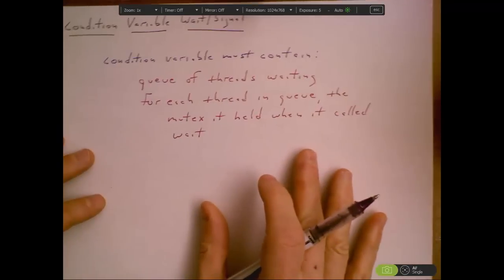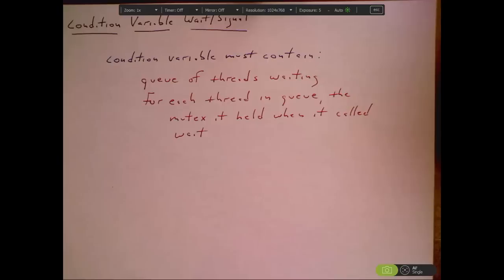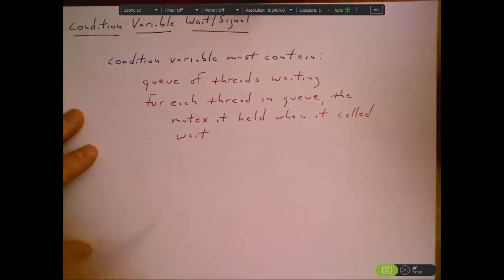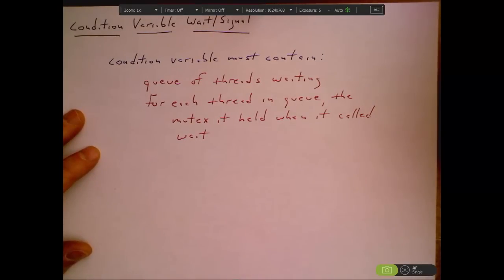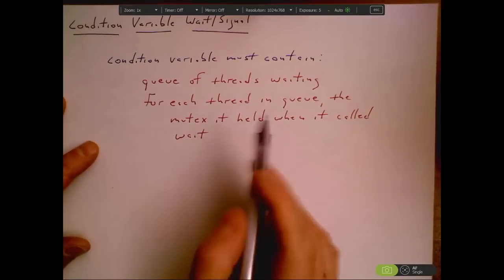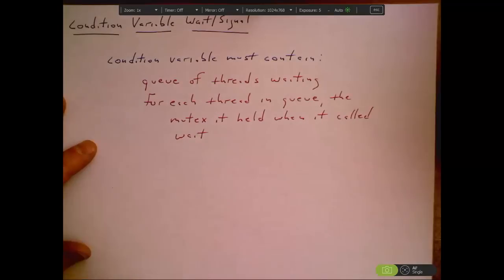Okay, what about condition variables? Let's think about what information we need to record for a condition variable. Well, there's going to be a queue of threads waiting. When somebody waits, we put them in that queue. And when they call wait, they have a mutex associated with it, so we need to record, for each thread that's in the queue, what mutex it held when it called. Because when we signal it and wake it up, we need to have it reacquire that mutex.